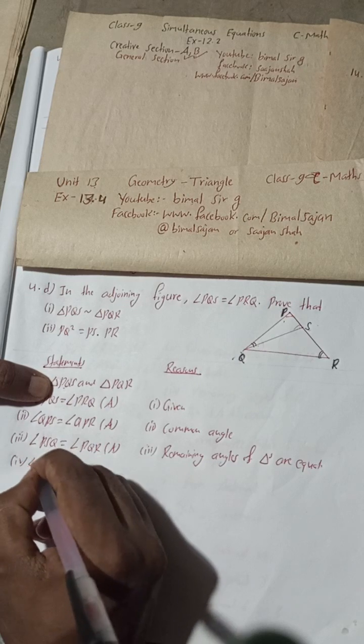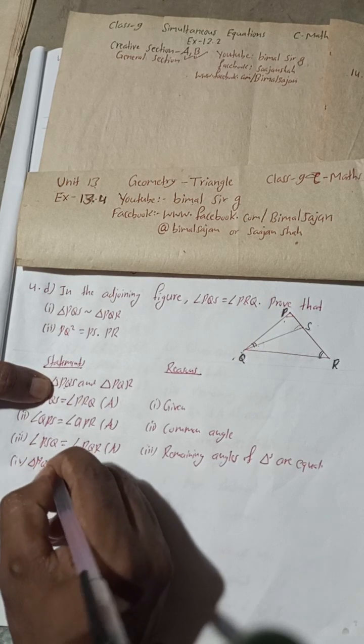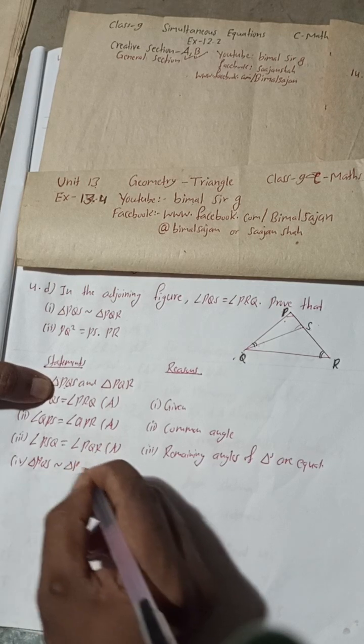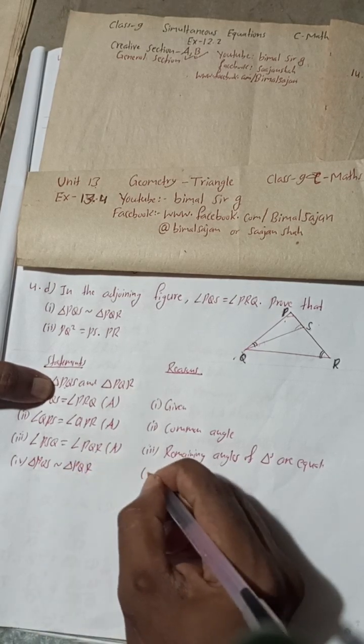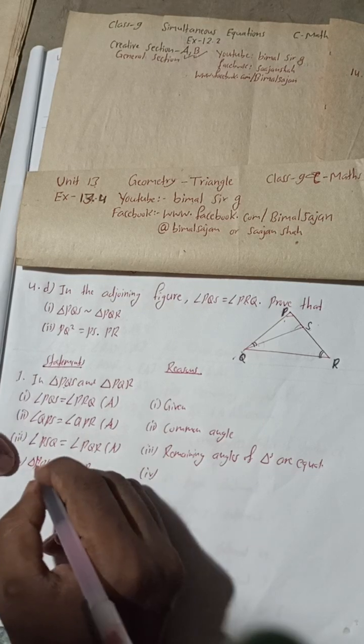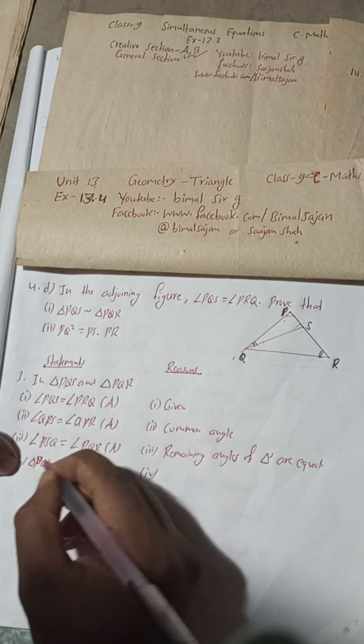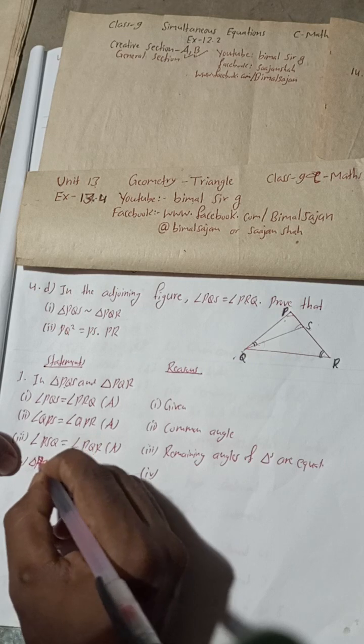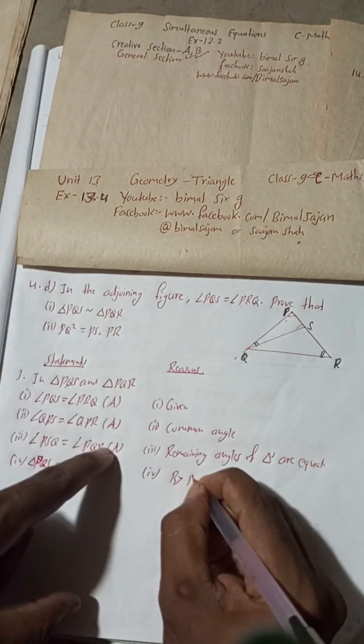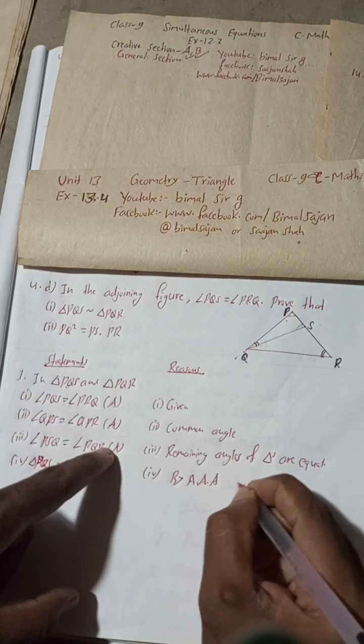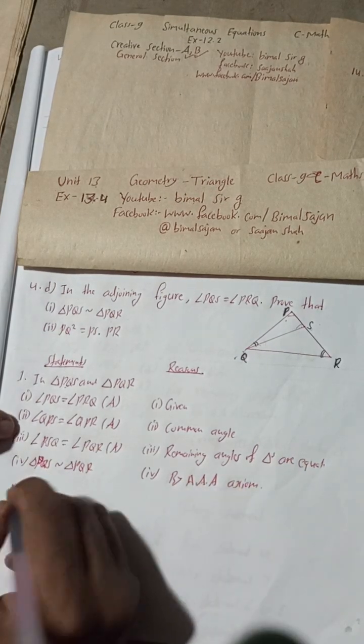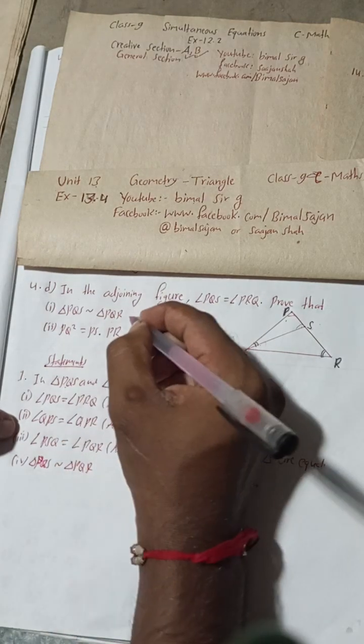Okay, now for number four we can write that triangle PQS is similar to triangle PQR. Reason is by angle-angle-angle axiom. So this is now, this number one is proved.